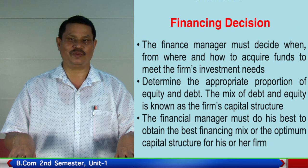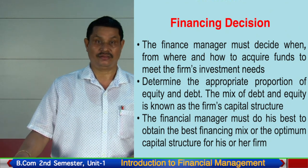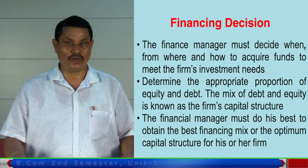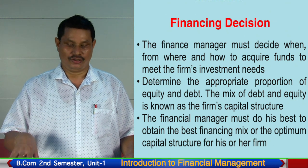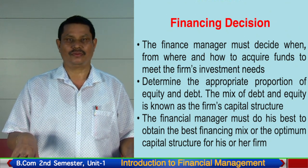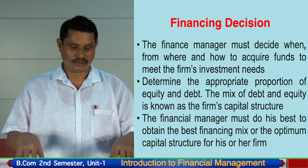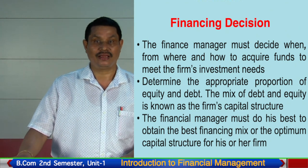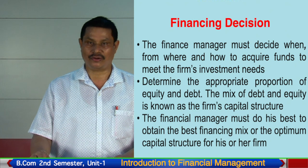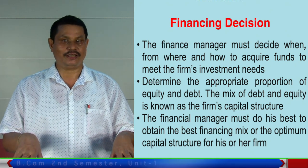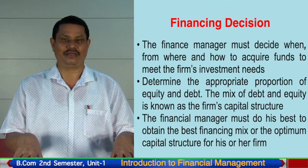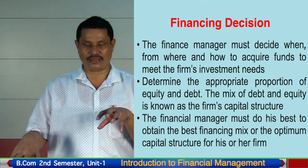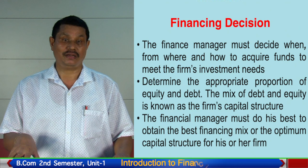The second decision is the financing decision. After having the investment decision, the second step of the finance manager is to decide when, from where, and how those needed funds will be acquired for investment. It will also determine the appropriate proportion of equity and debt. The mix of debt and equity is known as the capital structure, and the finance manager will have to go for an optimum capital structure.